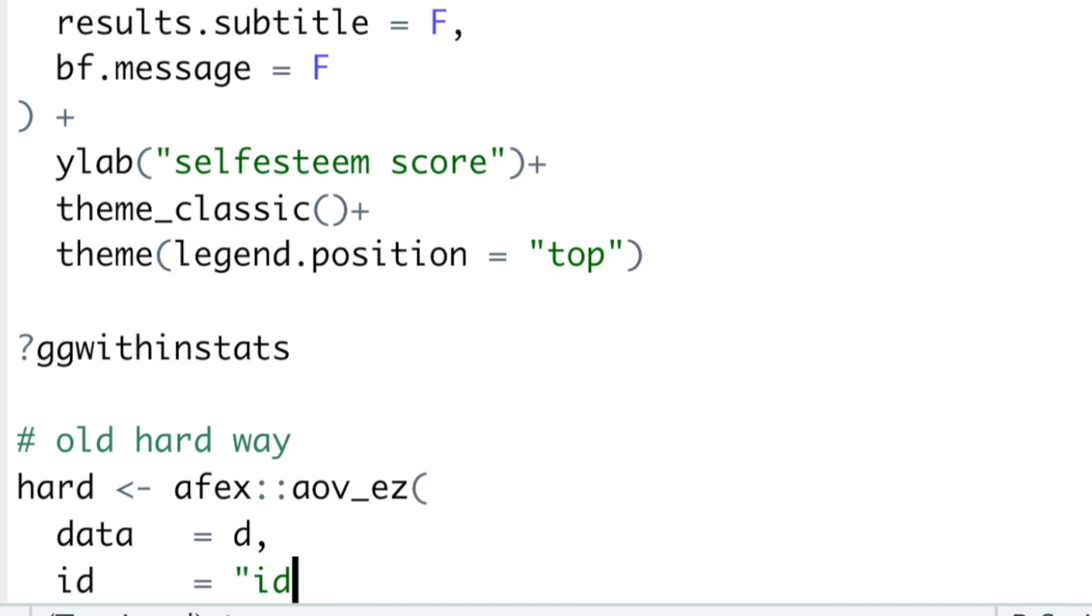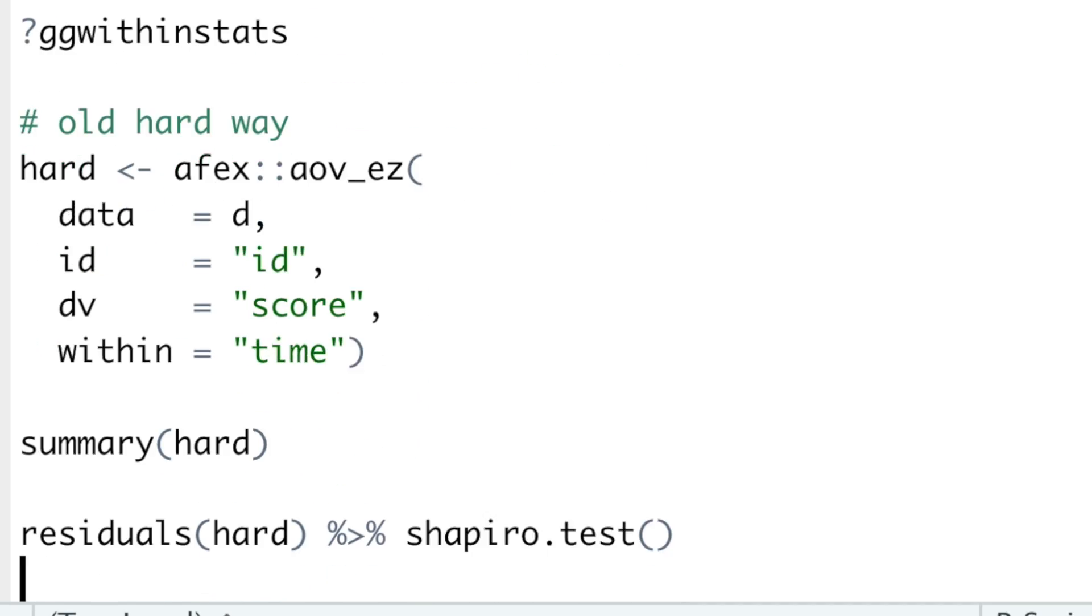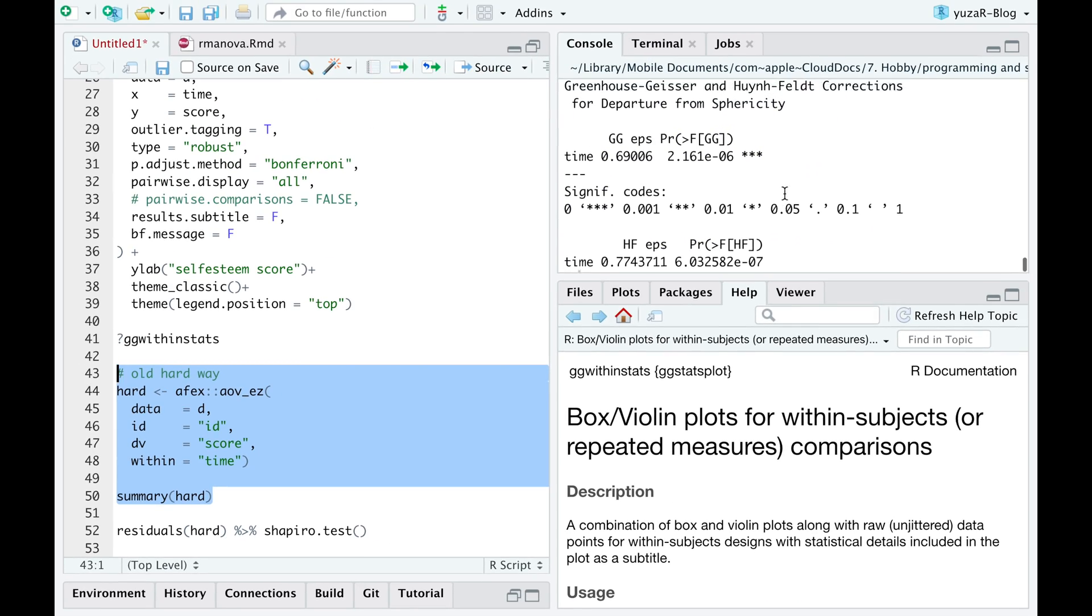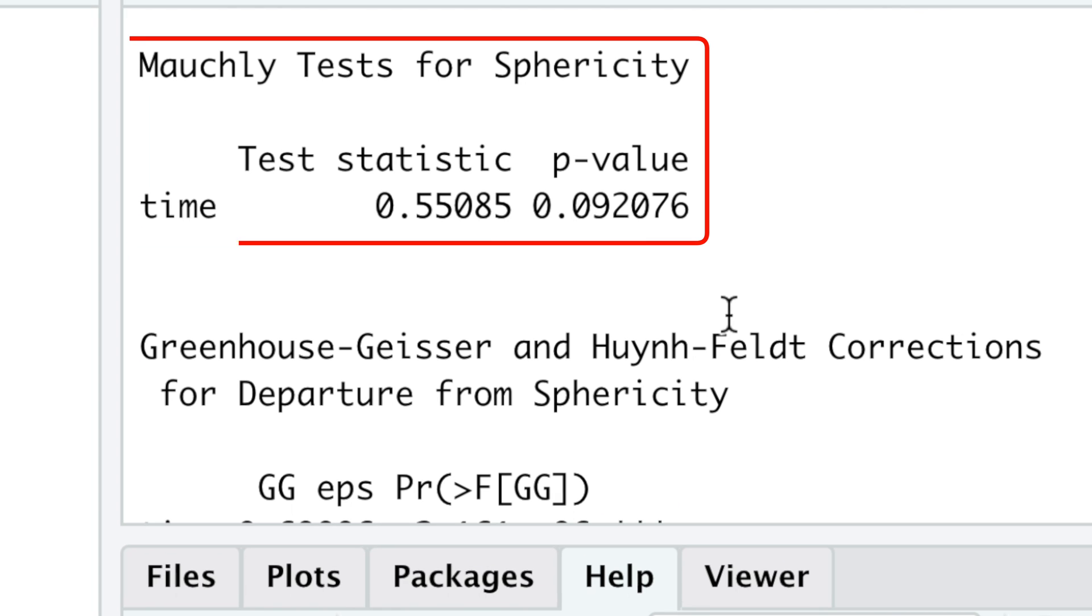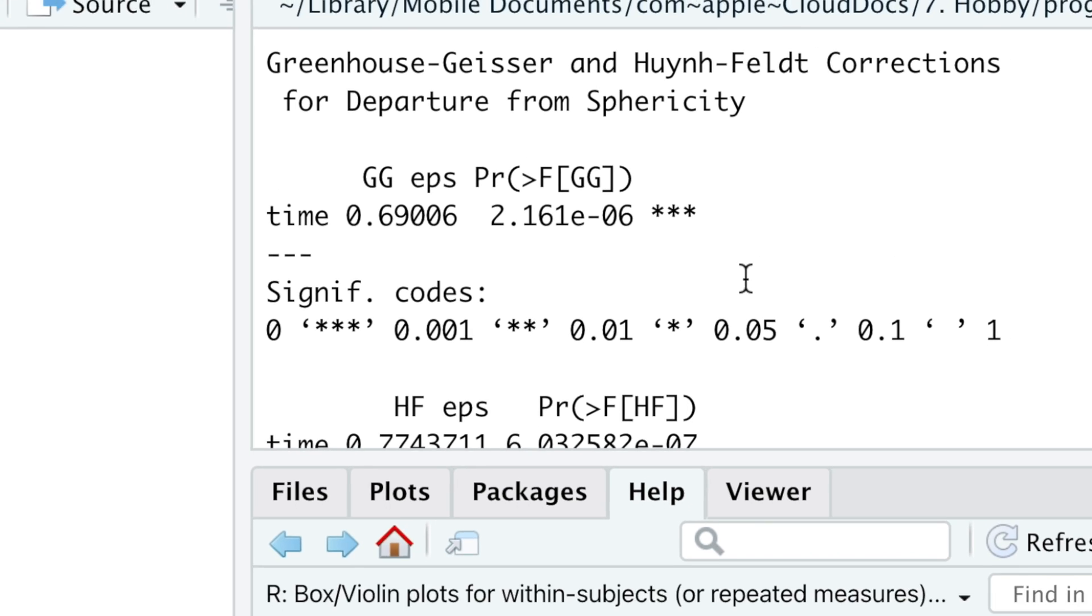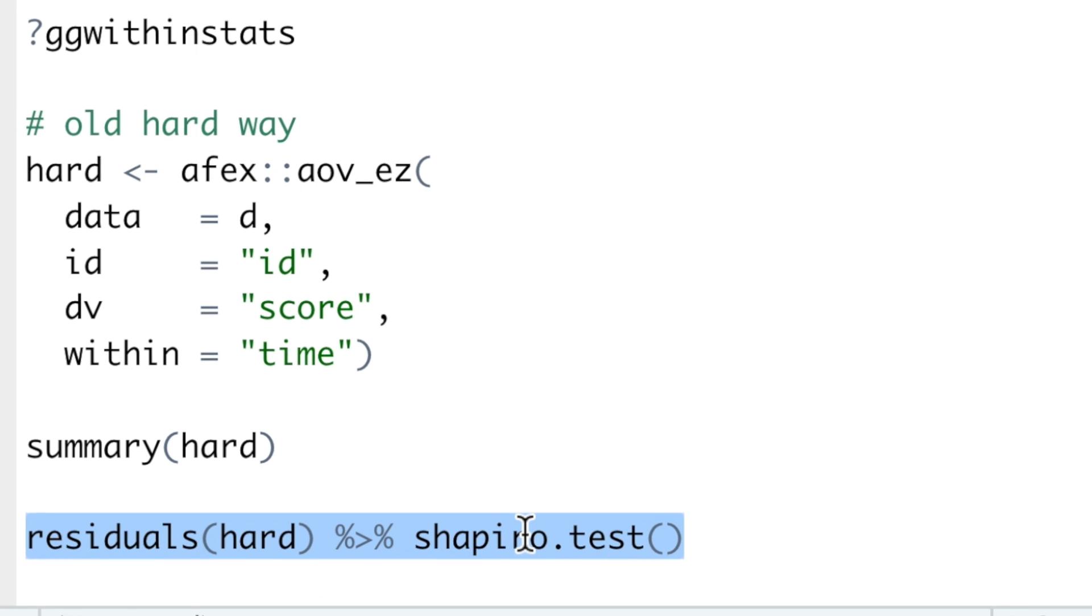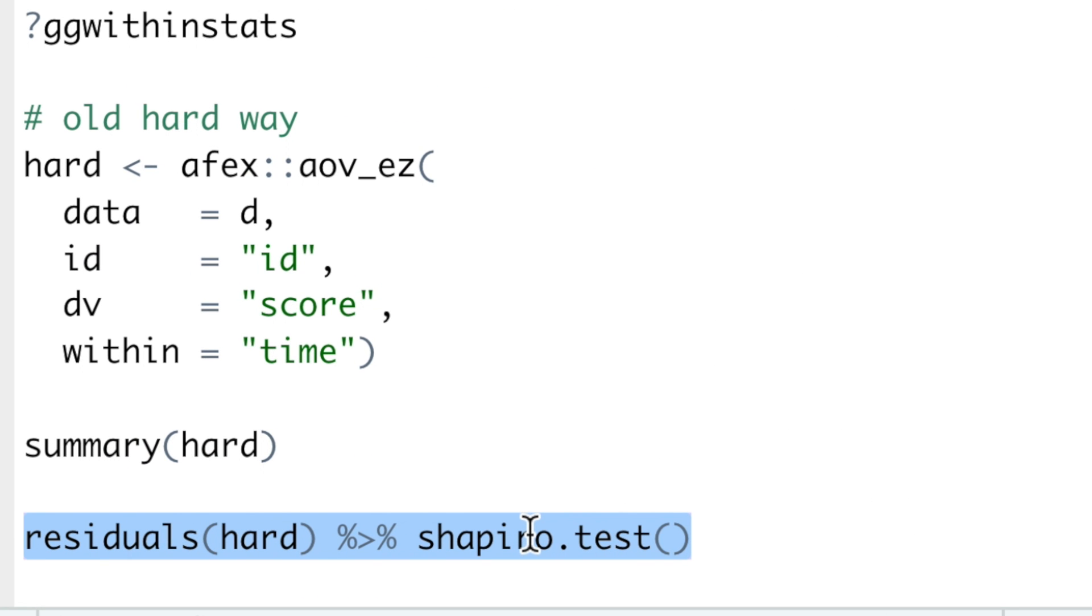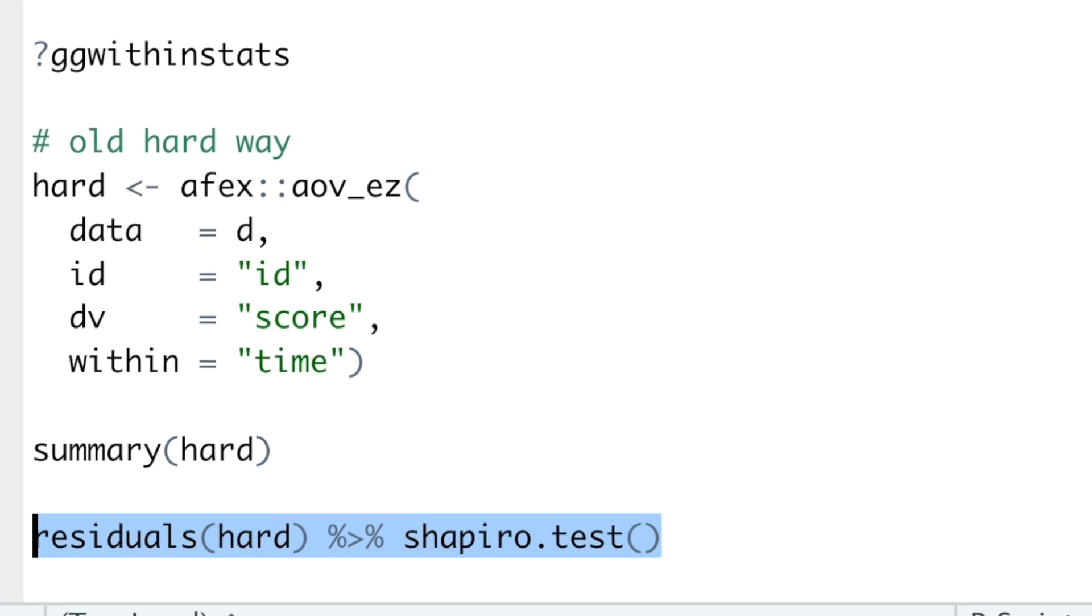The aov_ez function from AFEX package allows to easily check both assumptions. First, it conducts Mauchly's test of sphericity, and automatically corrects p-values of omnibus test.